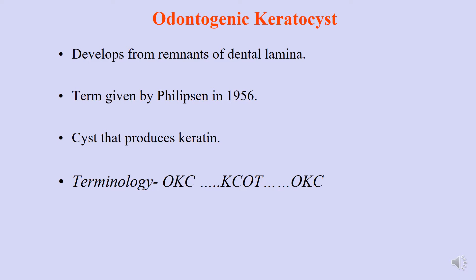Regarding the terminology of OKC: from 1956 to 2005, odontogenic keratocyst was the term used to describe this lesion. In 2005, the WHO reclassified it as a benign odontogenic tumor rather than a cyst, due to its aggressive behavior, high recurrence rate, and the large amount of jaw tissue it destroys. Considering those factors as well as molecular research findings, it was recategorized, and the new term given was KCOT — keratocystic odontogenic tumor.